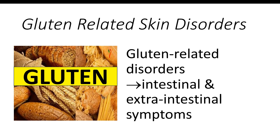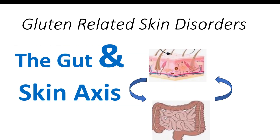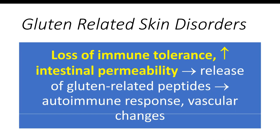While the existence of extra-intestinal manifestations is well documented, their prevalence is still not clearly defined. The correlation between skin and bowel disorders in both children and adults is well supported by extensive literature. A growing number of mucocutaneous diseases linked to gluten intake beyond dermatitis herpetiformis are being increasingly documented. The most likely hypothesis for pathogenesis focuses on loss of immune tolerance in genetically predisposed individuals along with increased intestinal permeability, allowing gluten-related peptides to be released, triggering an autoimmune response, vascular changes, and resulting in malabsorption of vitamins and amino acids.